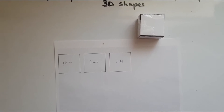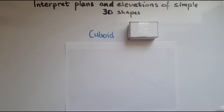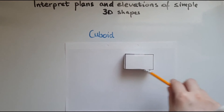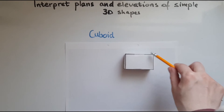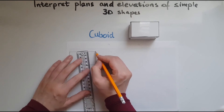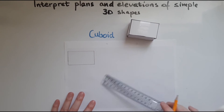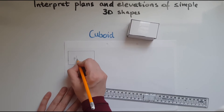We'll now move to the cuboid. Doing the plan first, what we're going to see from the top is a rectangle. I've measured the dimensions and it's seven by four centimetres. These are all right angles, 90 degree angles. So I've got the plan here.